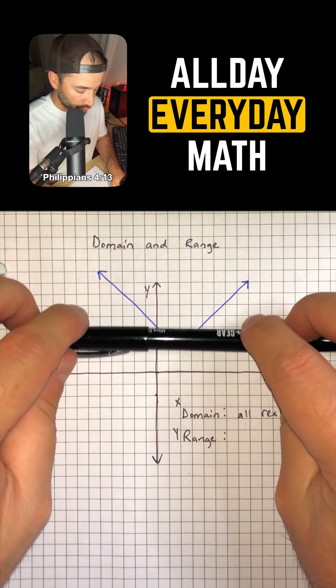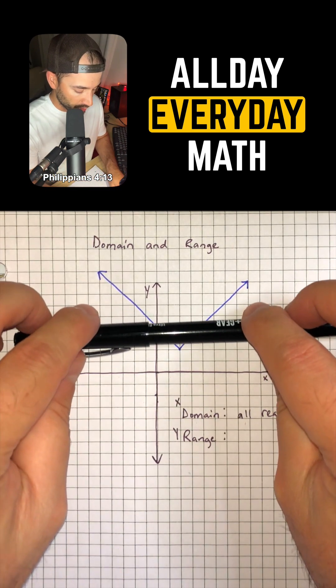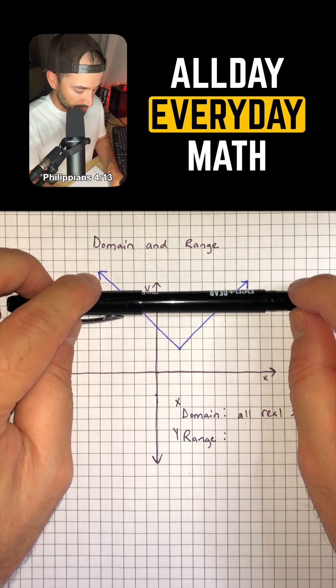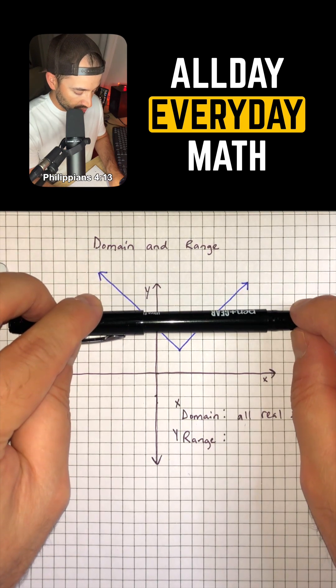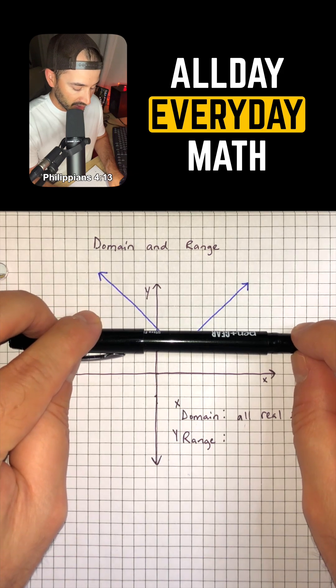So if we're looking at our graph, notice that we can go up and up and it's just going to keep on going. But if we start coming down, we're going to reach a point that we can't go any further.